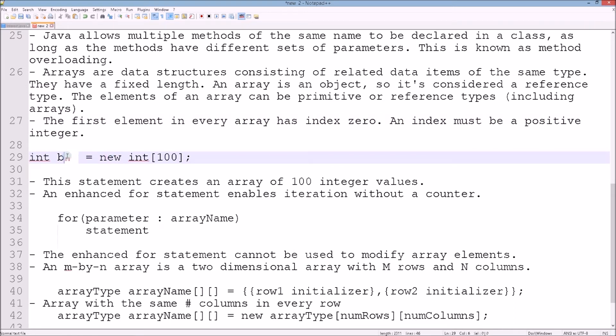Let's take a look at this statement: int b[] = new int[100]. Integer b is an array and we're declaring it as an array that holds 100 integer values.